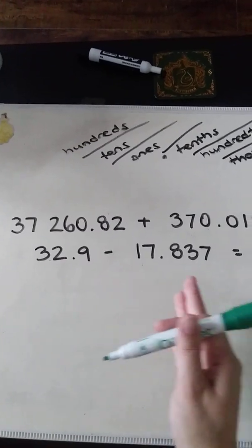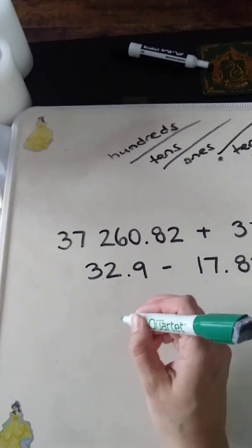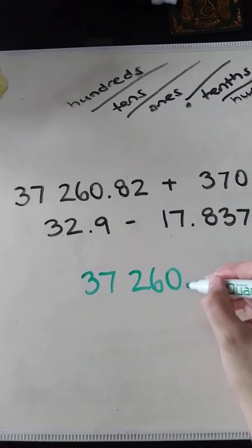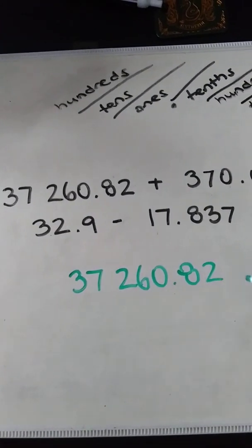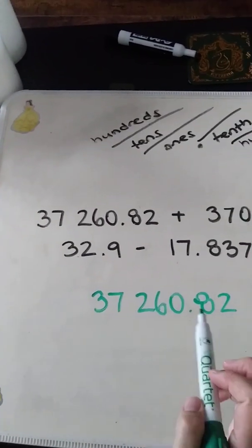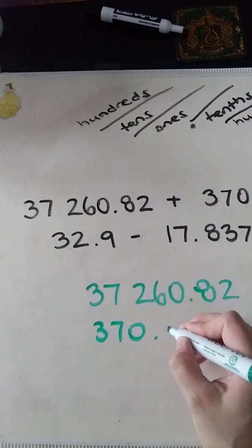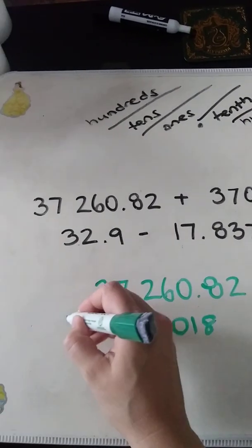I like to transfer the numbers somewhere that I could see them clearly and add them as best I can lining up. So I'm going to rewrite the numbers. Make sure I copy everything down very carefully. 37,260.82.